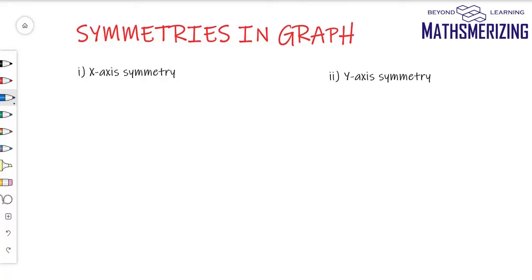In this lecture, we'll discuss symmetries in graphs. A graph may be symmetric about the x-axis, y-axis, or about the origin, or it may have symmetry about the line x equals a.